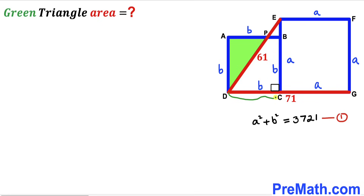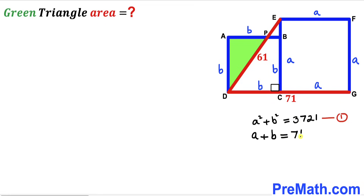Now let's focus on segment DG, whose length is 71. The DG length is also equal to a + b, so therefore a + b = 71. I'm going to label this as equation number two.